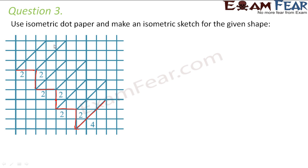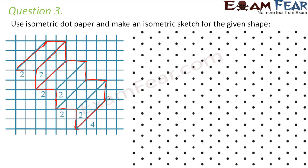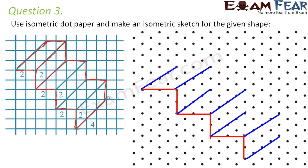So 4 units would mean this dimension is 4, and similarly lines all across are again 4 units. Once we draw this on the isometric dot sheet, we join the sections. First let us draw the 2-unit sections — just draw the two-unit section like this. Then draw the four-unit parallel lines which are 4 units in length.